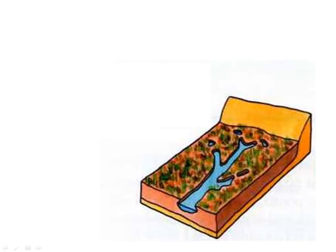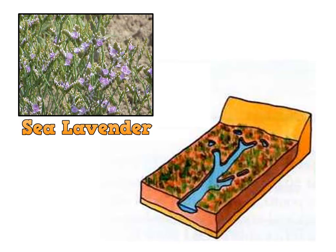You can get erosion along those channels that were cut, which could cause bank collapse, and a salt pan might form. Other plants such as sea lavender and sea thrift may colonise the marsh, and these will be much higher up and further away from the sea.